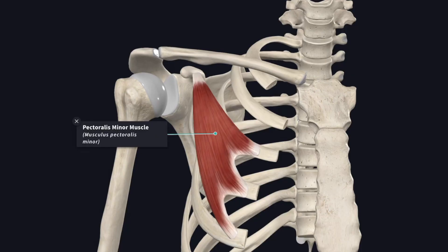In this video we are going to study the pectoralis minor muscle. It is a triangular muscle that lies beneath the pectoralis major. The axillary artery is divided into three parts by the pectoralis minor muscle, with the second part lying behind the muscle. The upper border gives attachment to the clavipectoral fascia and is accompanied by the superior thoracic artery. The lower border gives attachment to the suspensory ligament of the axilla and is accompanied by the lateral thoracic artery.